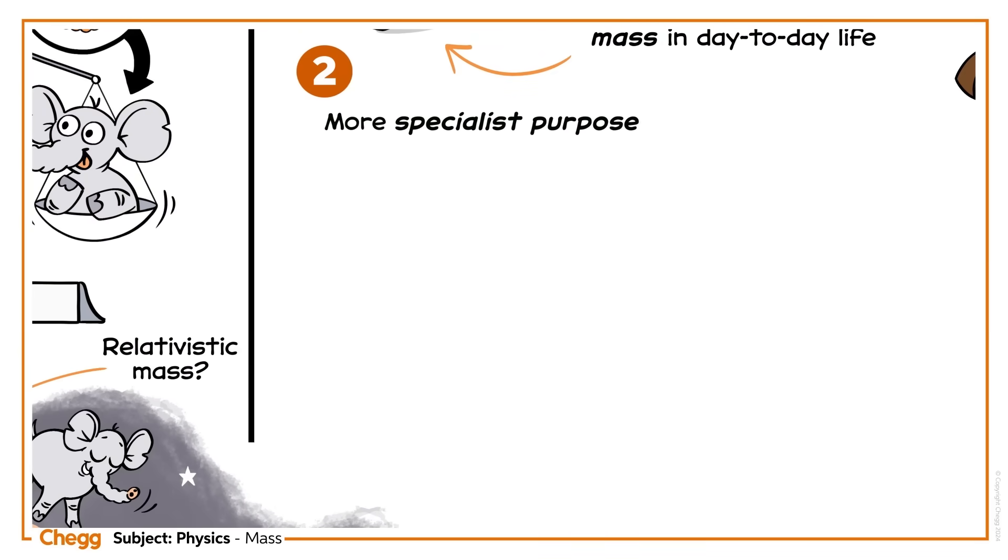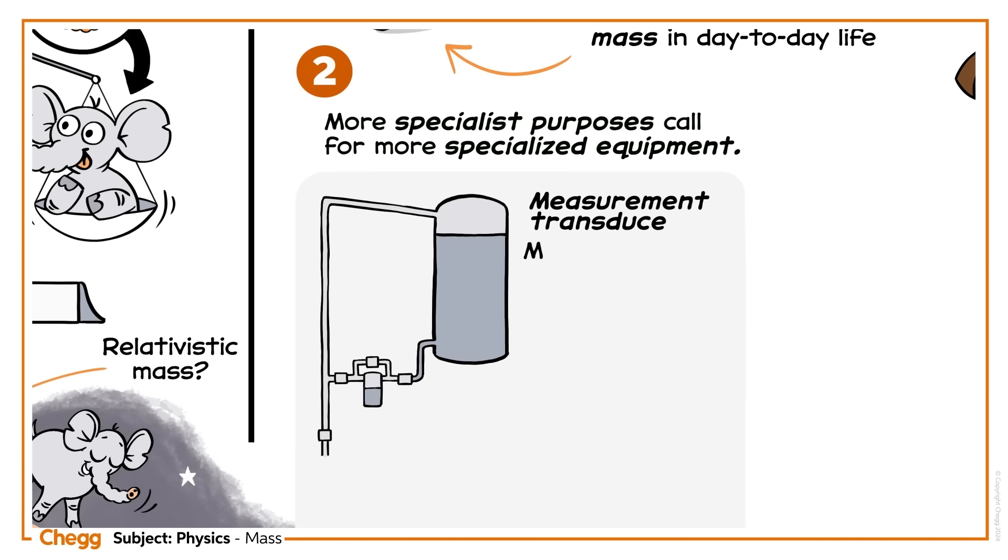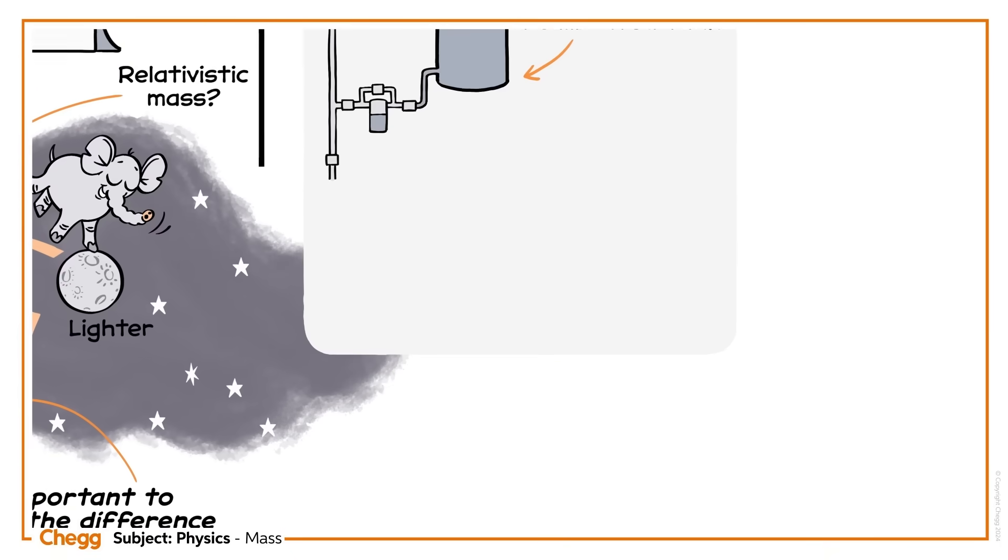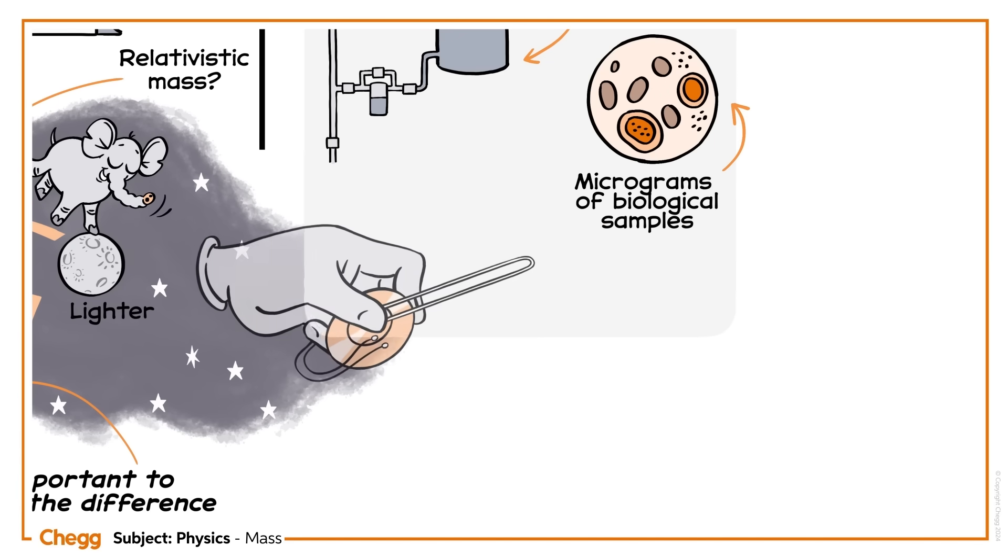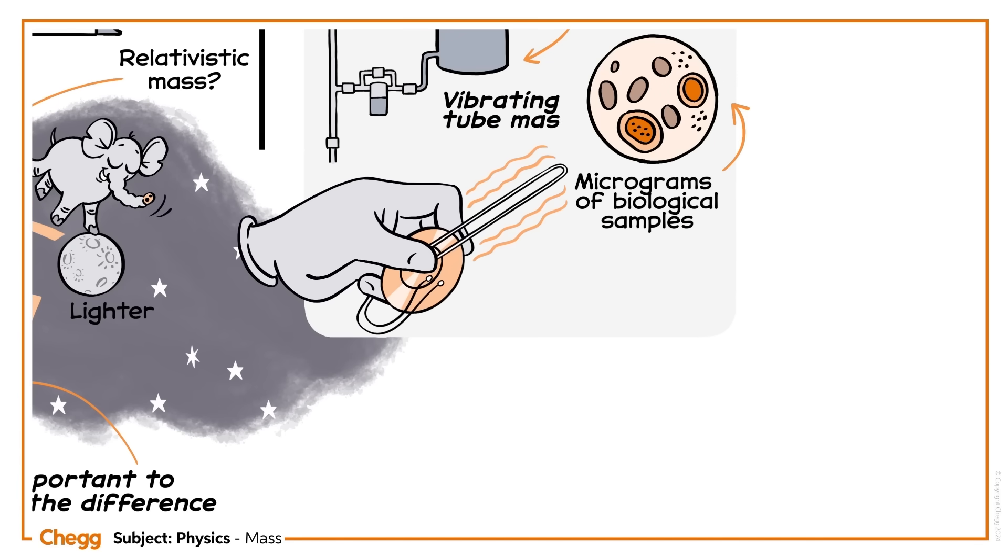More specialist purposes call for more specialized equipment. A measurement transducer measures the mass of a liquid in a calibrated tank. Scientists measuring small masses of biological samples would opt for a vibrating tube mass sensor.